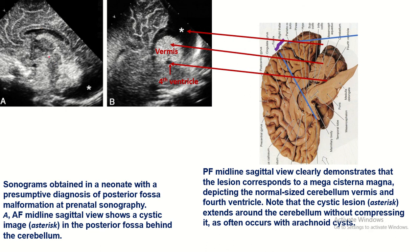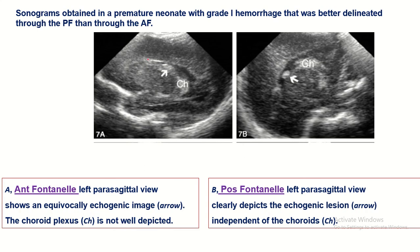This sonographic picture through the posterior fontanelle approach shows a cystic lesion just behind the cerebellum. This is a mega cisterna magna — it does not compress the cerebellum or vermis, and the fourth ventricle is also patent. So through the posterior fontanelle approach, posterior cranial fossa malformations are clearly visualized.